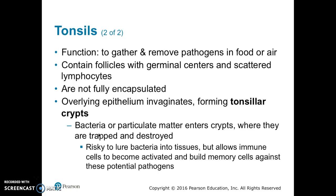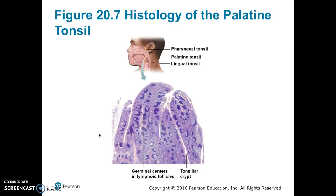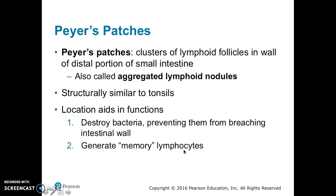This allows the immune cells to become activated and build memory cells against these pathogens. Figure 20.7 shows the histology of the palatine tonsil with the germinal centers and the tonsillar crypt. Peyer's patches are clusters of lymphoid follicles in the wall and distal portion of the small intestines.